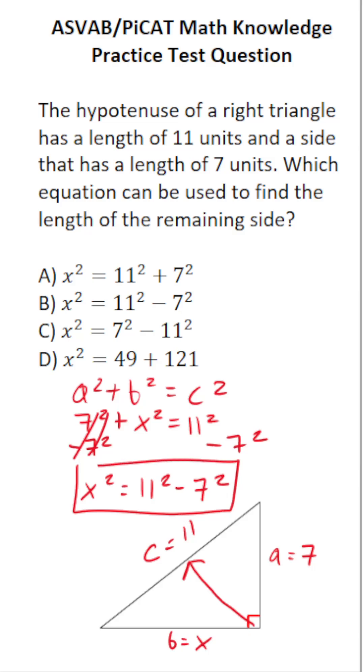Now, in this case, we don't have to work this out any further. So the correct answer is going to be x² = 11² - 7², which is answer choice B. Now, if you had to work this out further, you would take the square root of both sides and so on and so forth. But this one is just B.